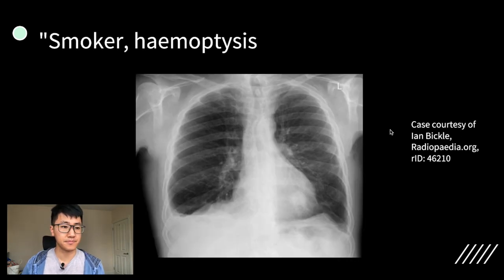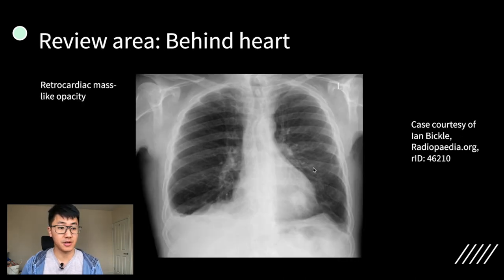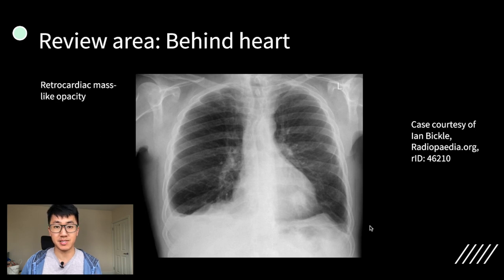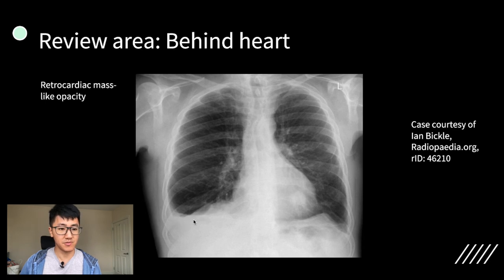Now try this one. The other review area is to look behind the heart, because the lung does go behind the heart, and you can see an ill-defined mass-like opacity. These are places where it's really easy to miss a lung tumour, so if you spot one you're potentially saving this patient's life. Well done to the eagle-eyed of you that spotted it. There's probably a small right pleural effusion as well.